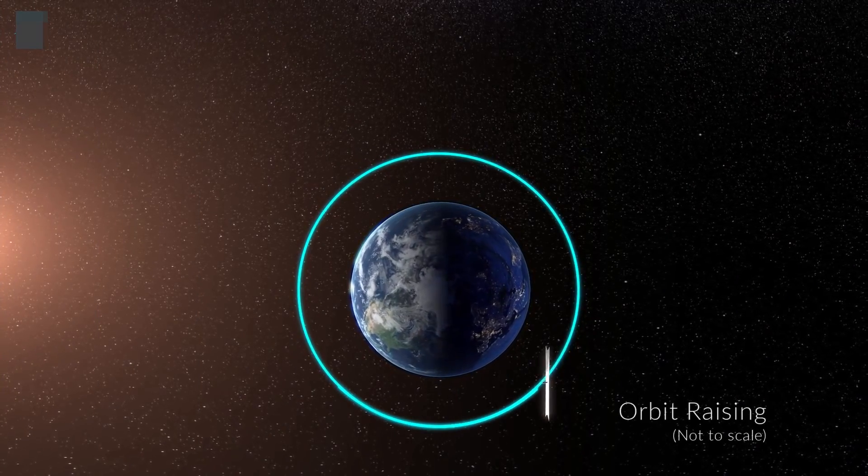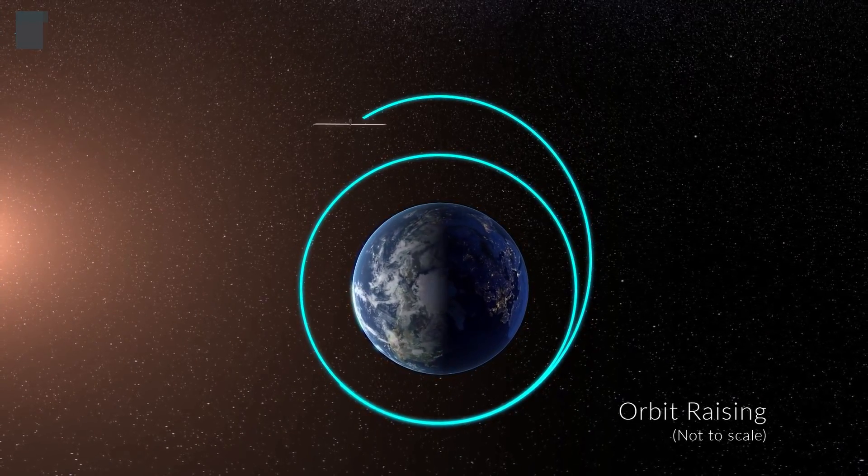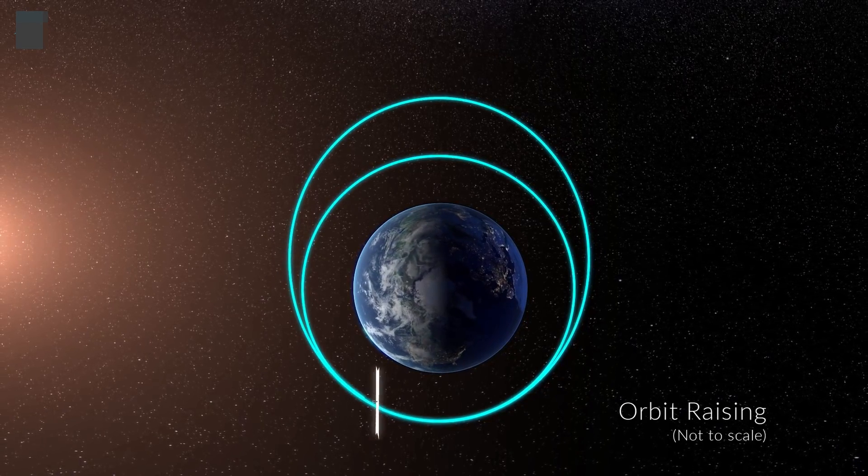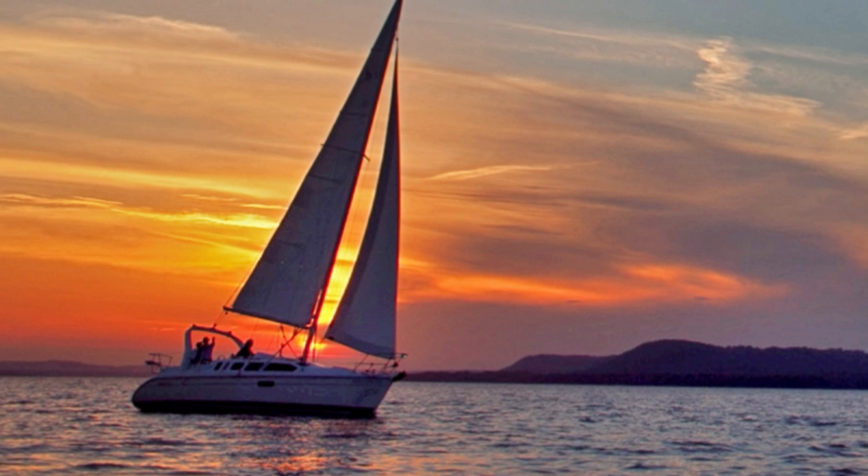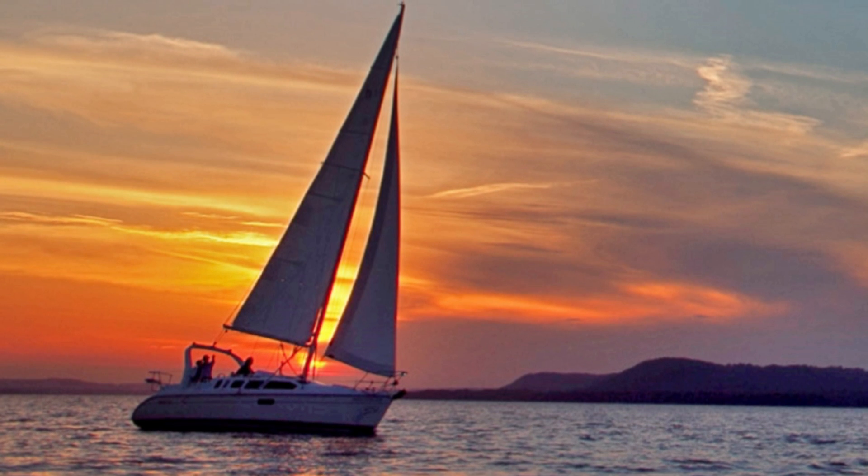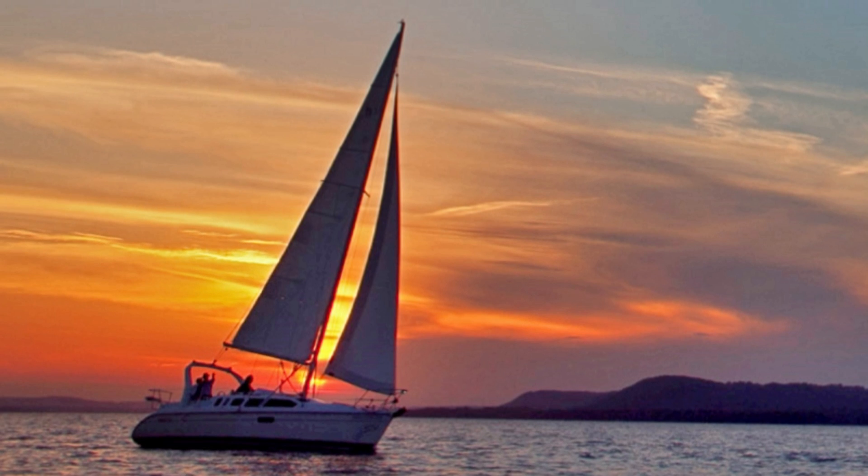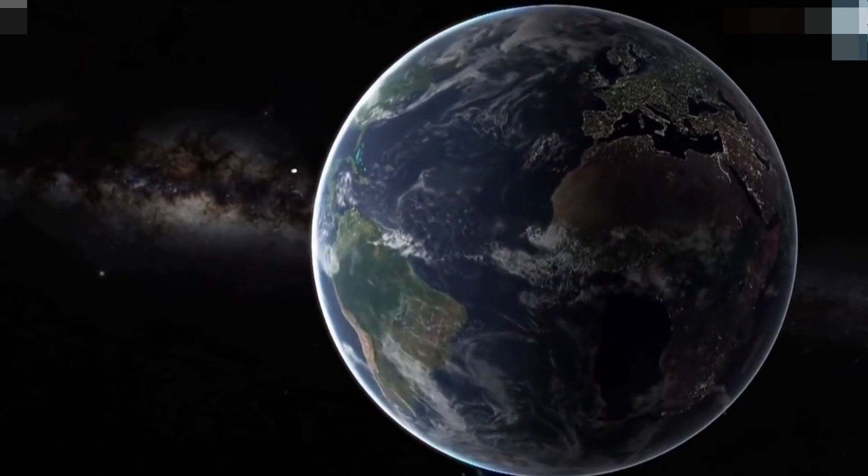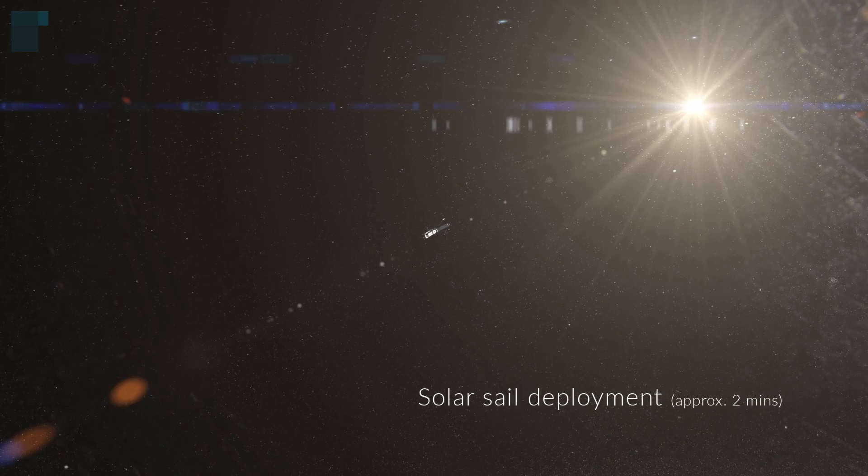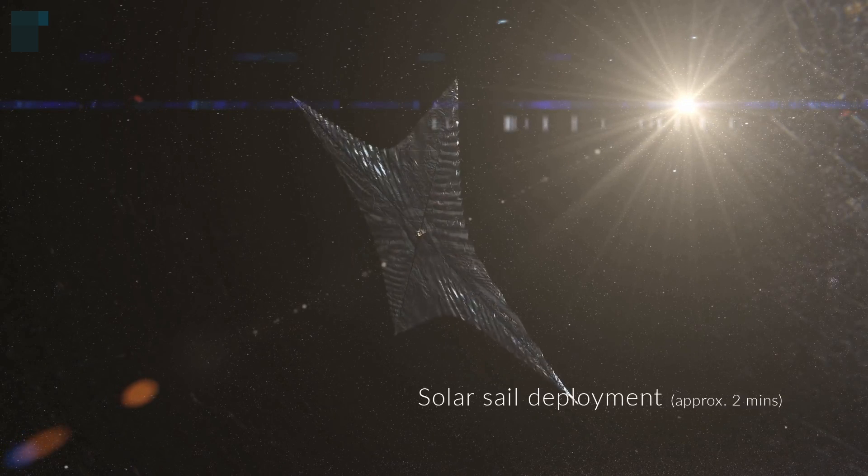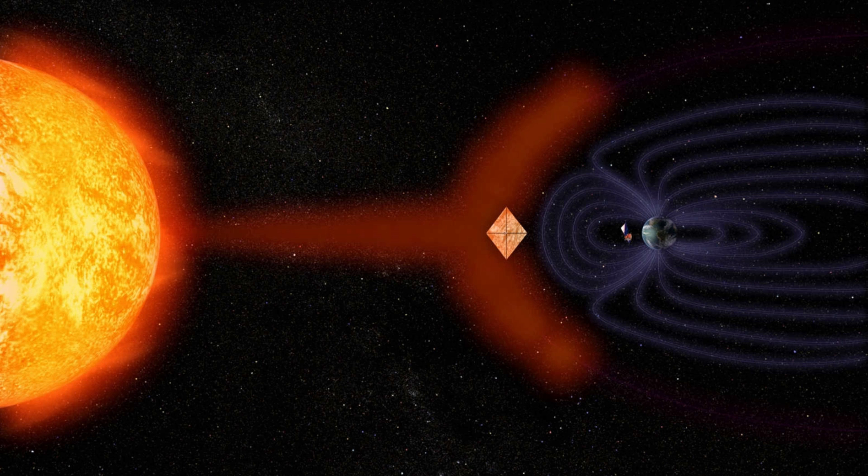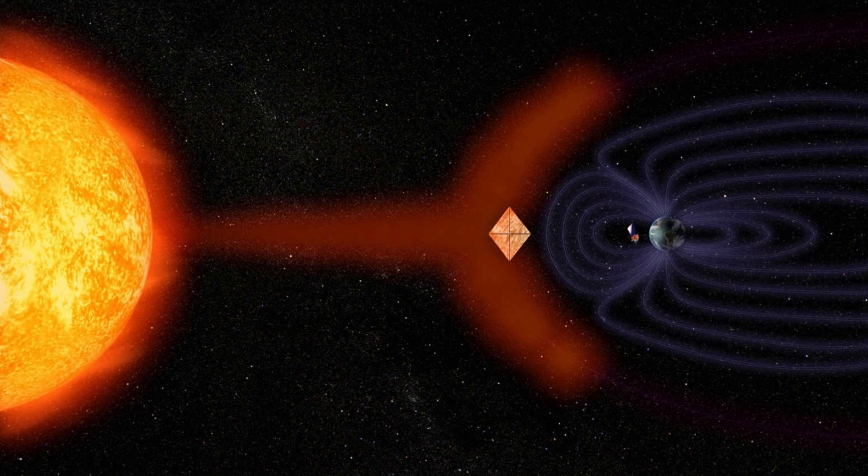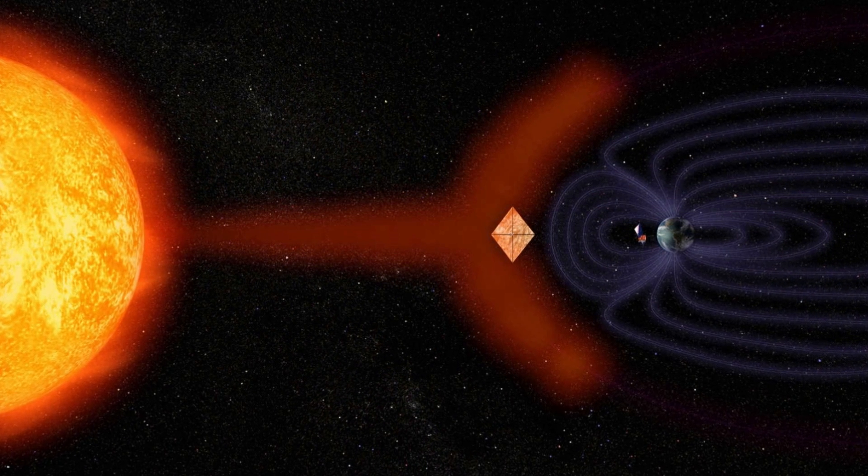By changing the angle of the sail relative to the sun, it is possible to affect the direction in which the sail is propelled, just as a sailboat changes the angle of its sails to affect its course. It is even possible to direct the spacecraft towards the sun rather than away from it. By using the photon's pressure on the sail, we can slow down the spacecraft's speed and bring its orbit closer to the sun.